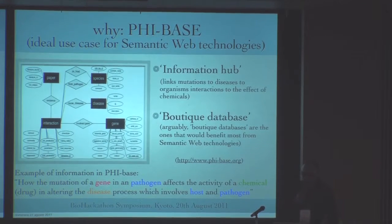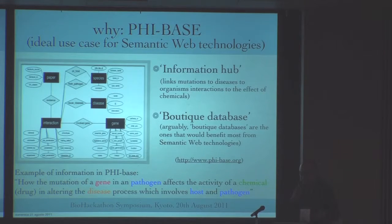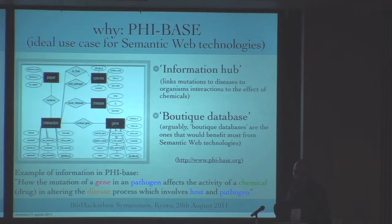At the same time, it is a UTIC database. I think UTIC databases are probably the ones that would benefit most from semantic web technologies, because it is an easy platform to integrate information. This is just an example of the information that is in PHI-base: how the mutation of a gene and the pathogen affects activity with a chemical in the disease process, which involves host and pathogen. So it is pretty complex information.